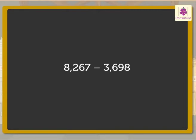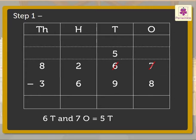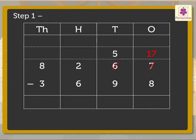Now, let us look at the process of subtraction of these numbers directly. Step 1: Subtract the digits in the ones column. As the ones are not enough, we regroup the tens. That is, 6 tens and 7 ones is equal to 5 tens and 17 ones. Therefore, 17 minus 8 is equal to 9 ones.